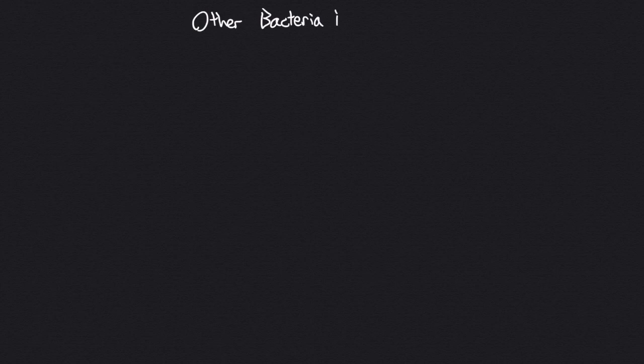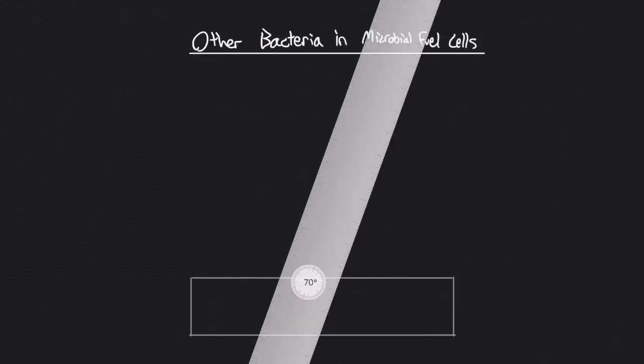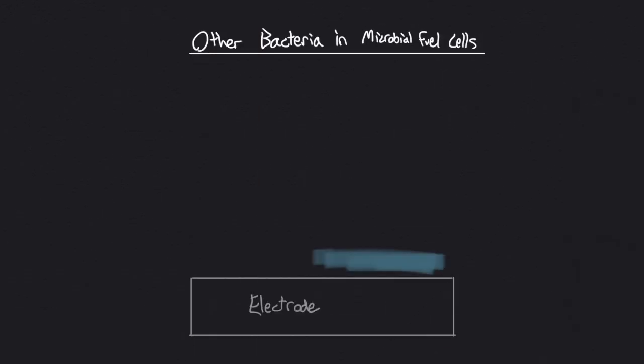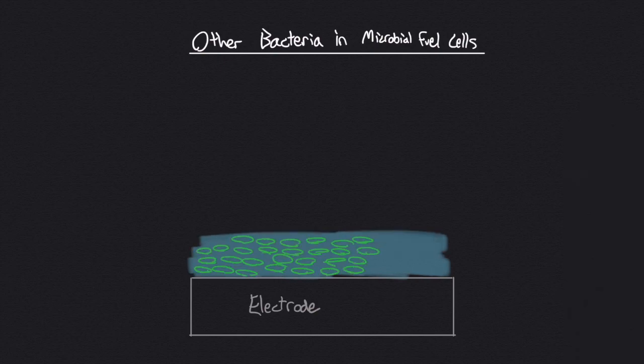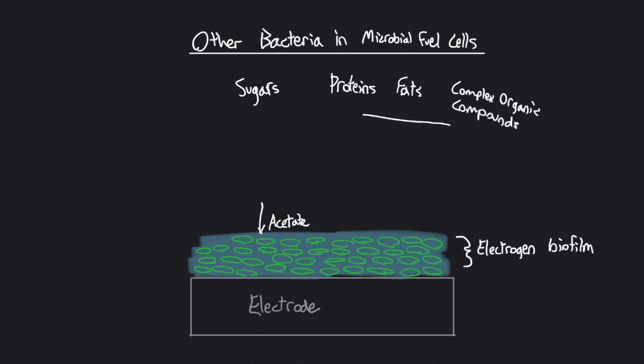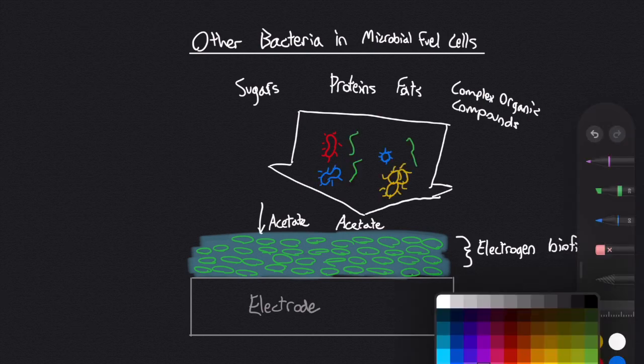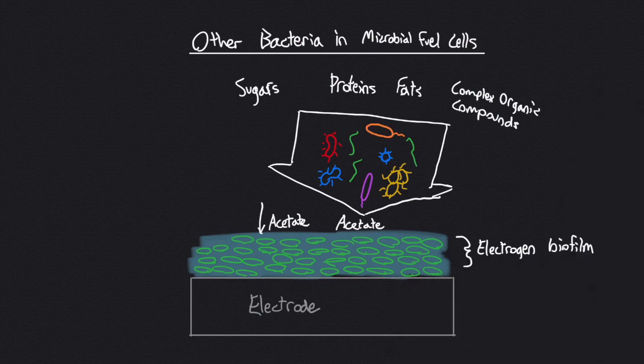Electrogens are unable to break down many complex organic compounds. For example, Geobacter sulfurreducens is unable to break down sugars, fats, or proteins. It is only able to break down acetate and hydrogen. In order to have a microbial fuel cell that can utilize a wide variety of organic material, there needs to be a mix of microorganisms that can break down complex organic matter into simple compounds that the electrogens can digest. Without this mix of bacteria and other microorganisms, the microbial fuel cell would only be able to utilize pure acetate or hydrogen to make electrical energy.